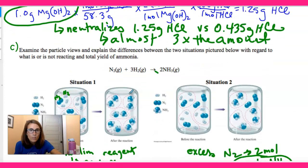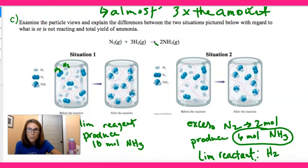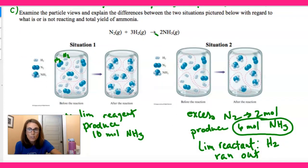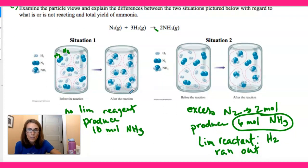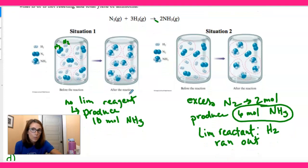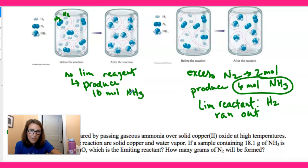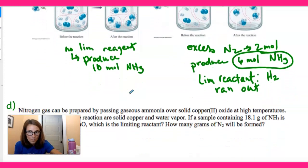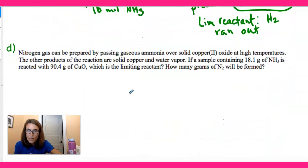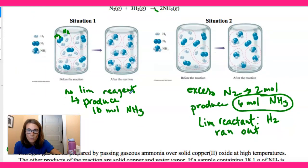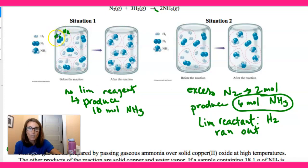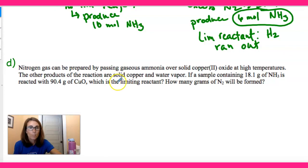In situation one there is no limiting reagent — we were able to produce 10 moles of NH3 because we had just the right starting amounts of N2 and H2 in the perfect mole ratio. To explain the differences between the two situations with regard to what is or is not reacting and total yield of ammonia: in situation one, both reagents fully reacted and were totally used up.